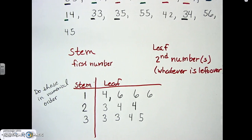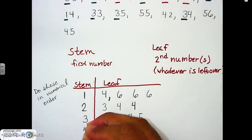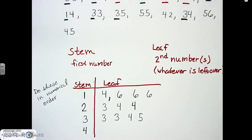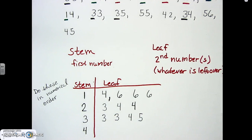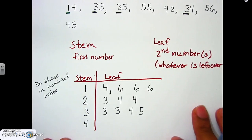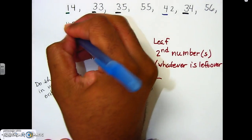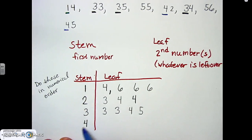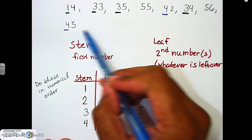Let's take a look at the fours. Remember, the first number is the stem and the second number is the leaf. For the fours, we have two numbers starting with four. The stem is 4, then we go to the leaf — we have two, then five.